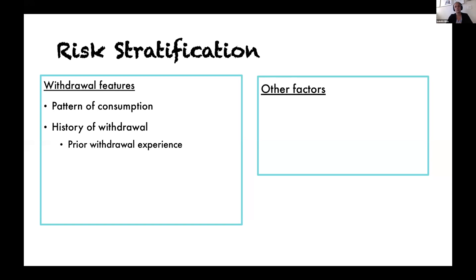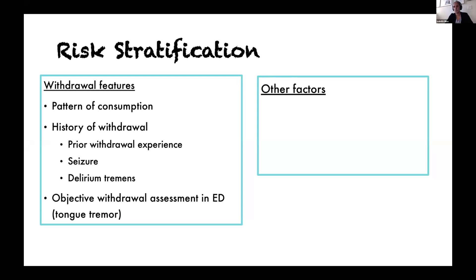Ask about their history of withdrawal — their prior experiences, when was the last time they went a couple of days without drinking, what were their symptoms? Were they mostly subjective such as anxiety, or mostly objective such as diaphoresis and tremor? Did they require medications? Were they able to manage at home alone? Do they have any history of seizures or delirium tremens — and when did it occur? Did it occur on the day of presentation or ten years ago when their pattern of consumption was much different? Objectively, how do they look in the ED? Many patients with alcohol use disorder have a baseline tremor, so look at the tongue for tongue fasciculations as a more objective confirmation of that tremor.